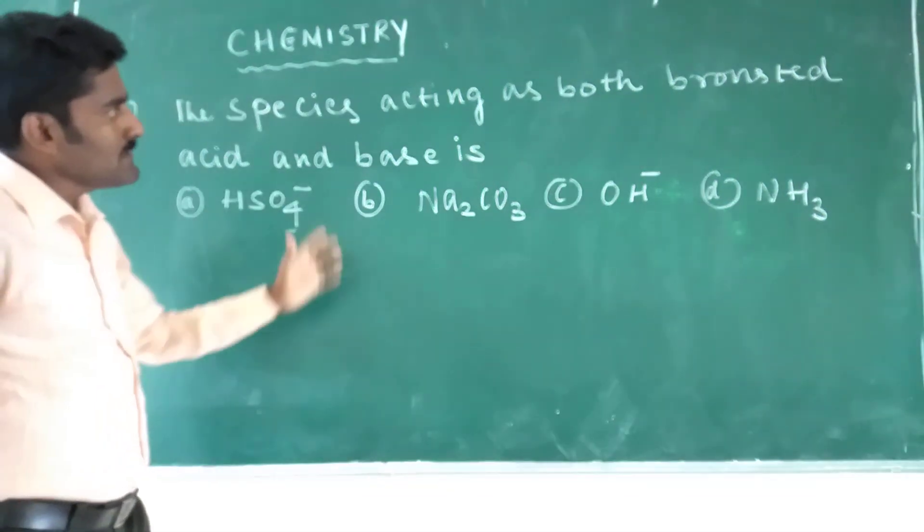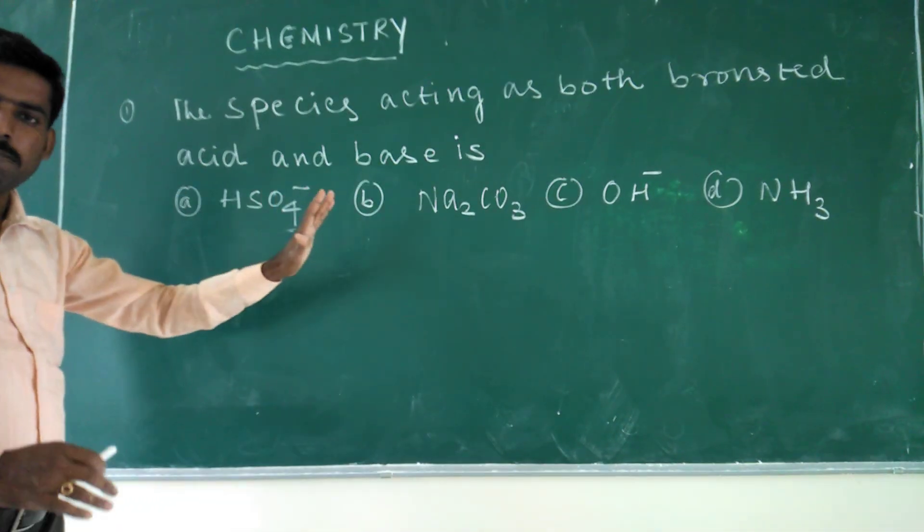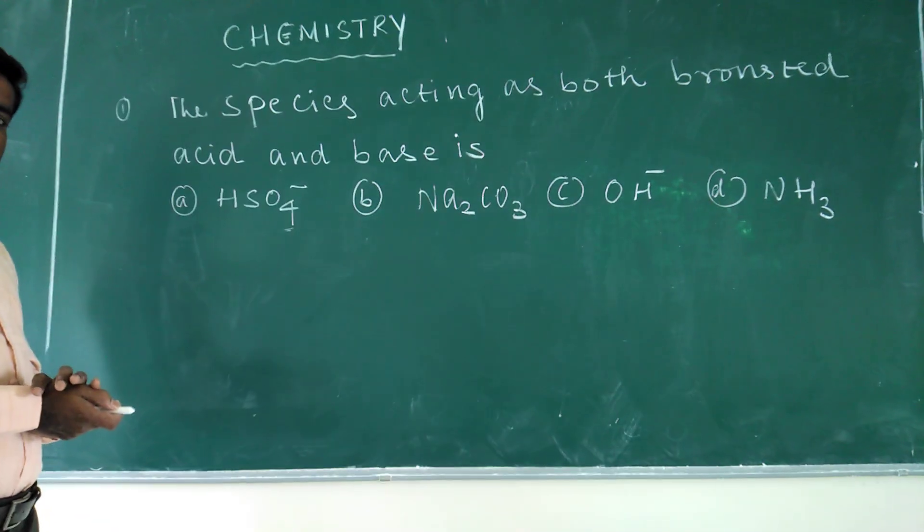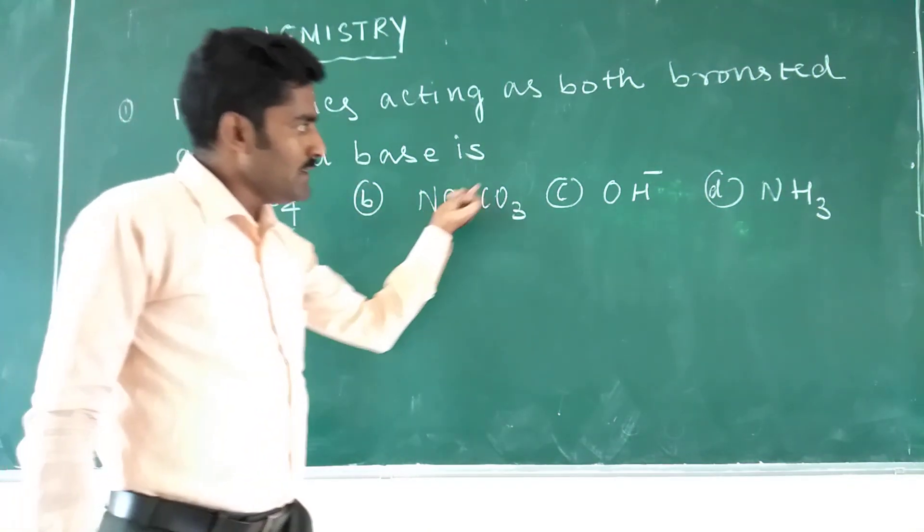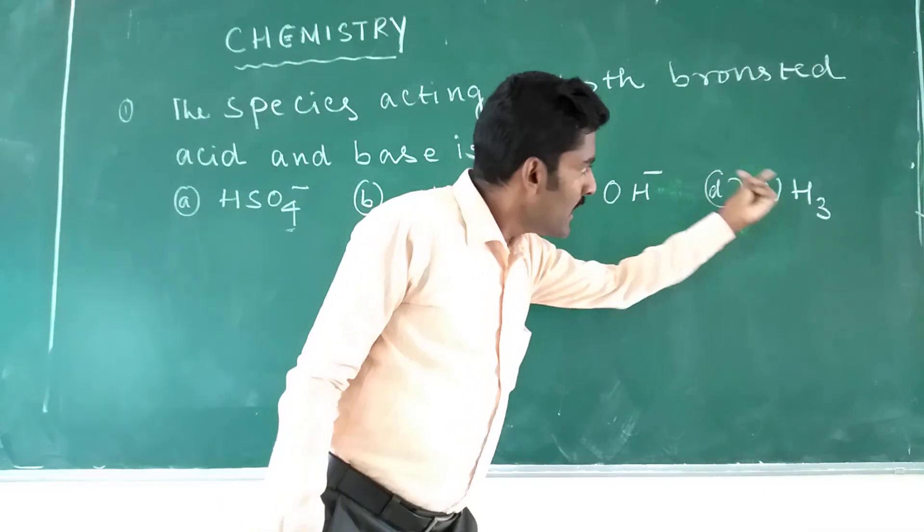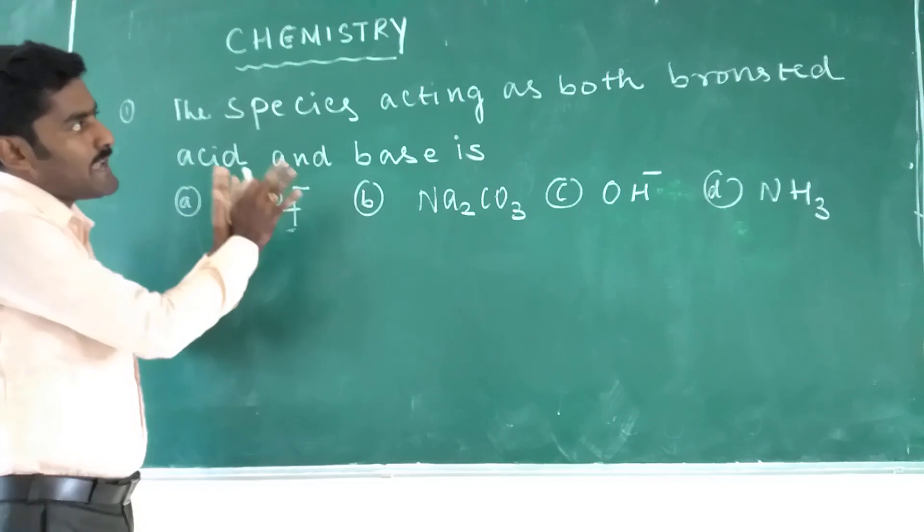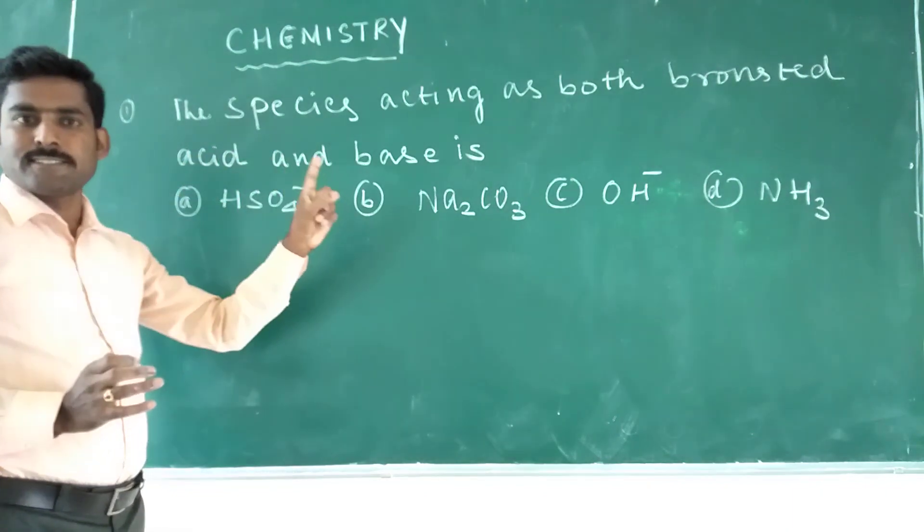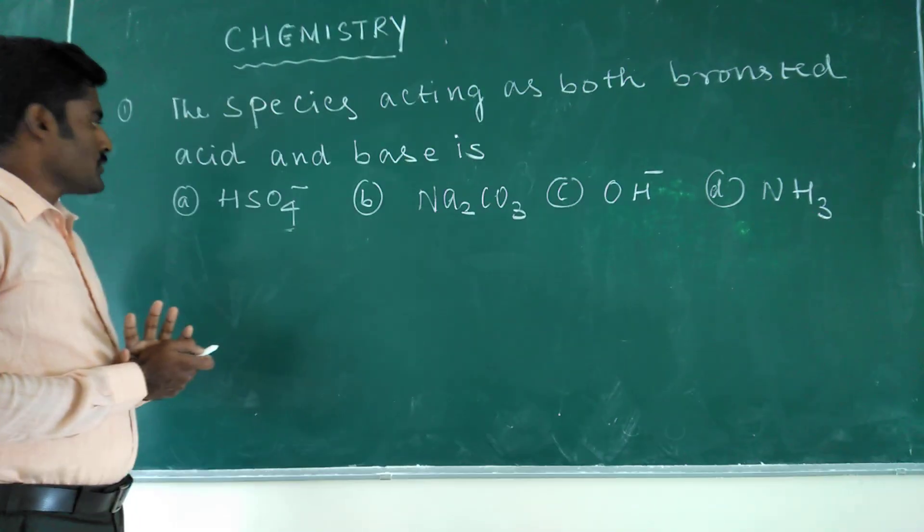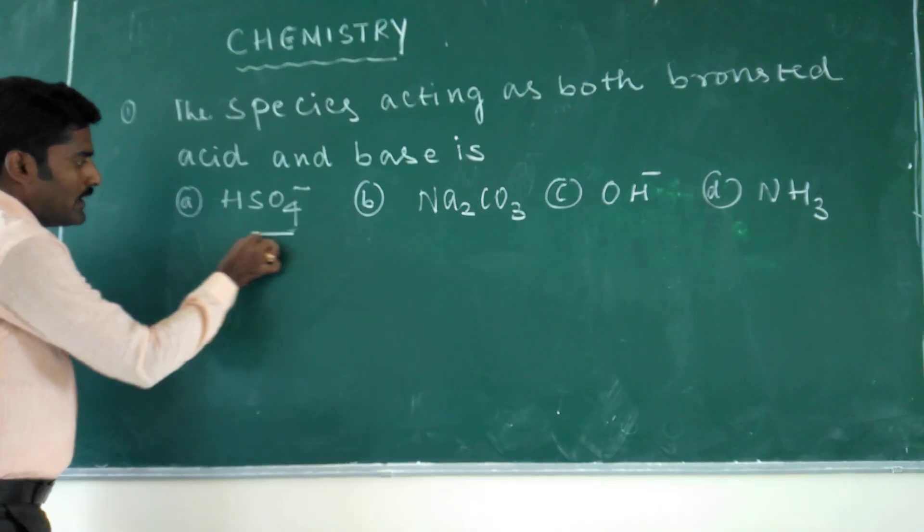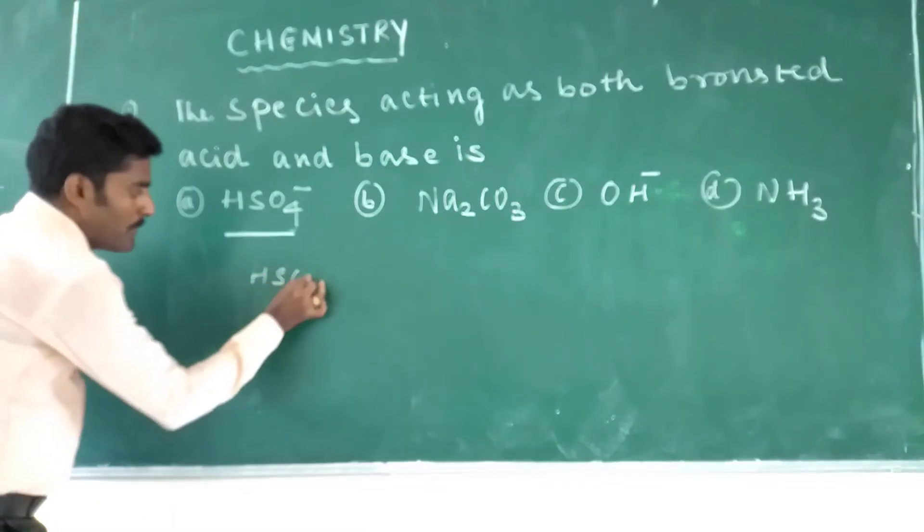So here the question says that the species acting as both Bronsted Acid and Bronsted Base. The species given as HSO4-, Na2CO3, OH- and Ammonia. So among these 4 options which one is acting as both Bronsted Acid as well as Bronsted Base.